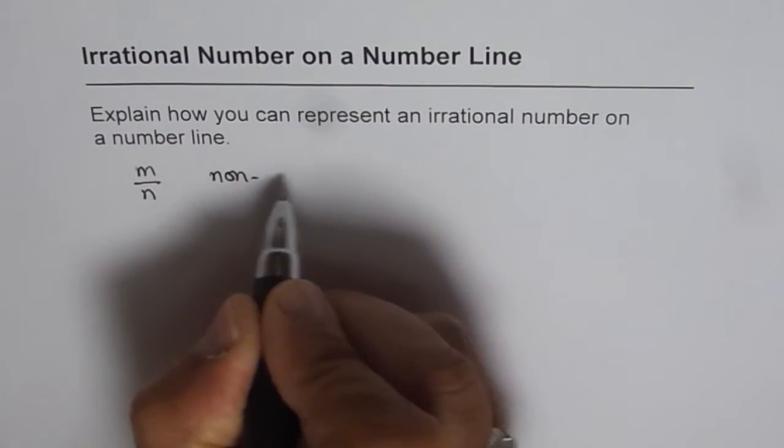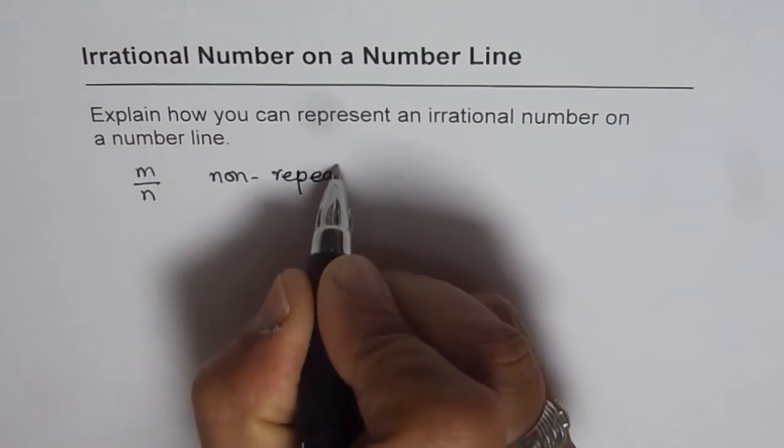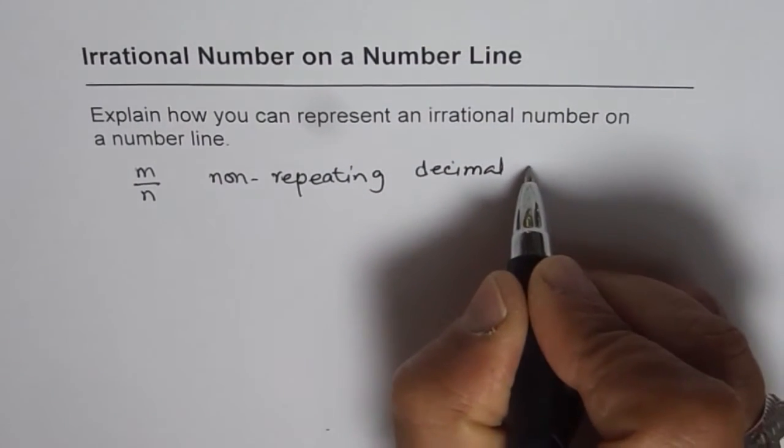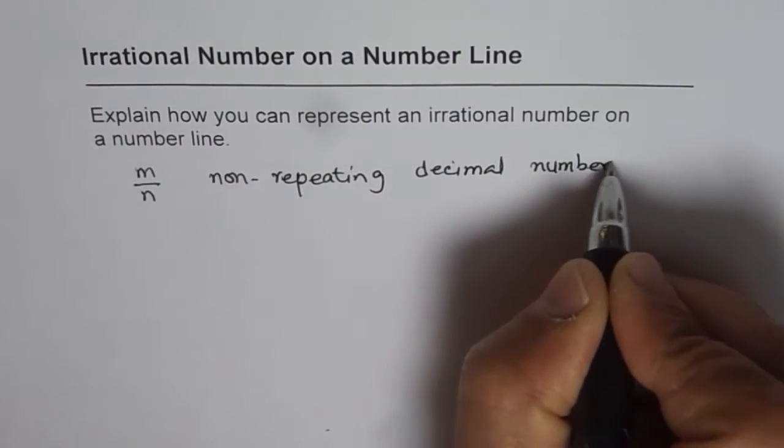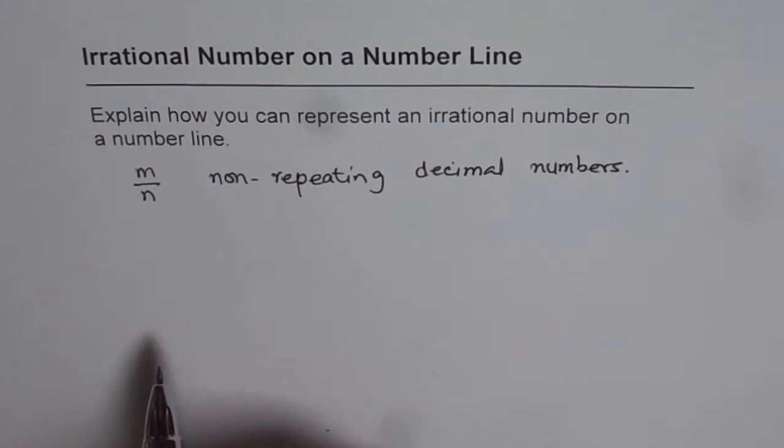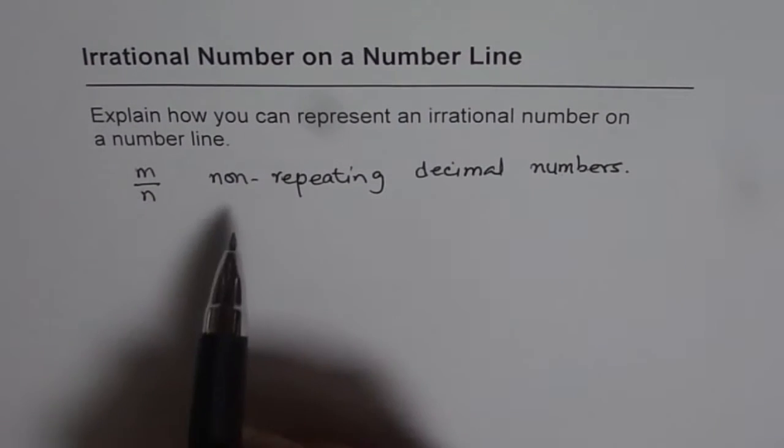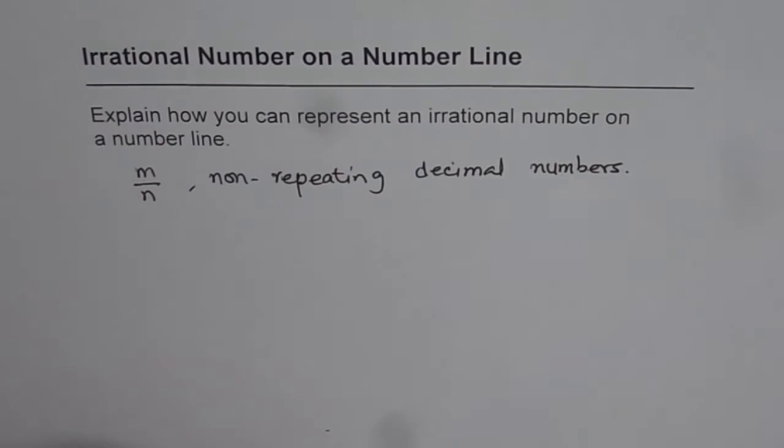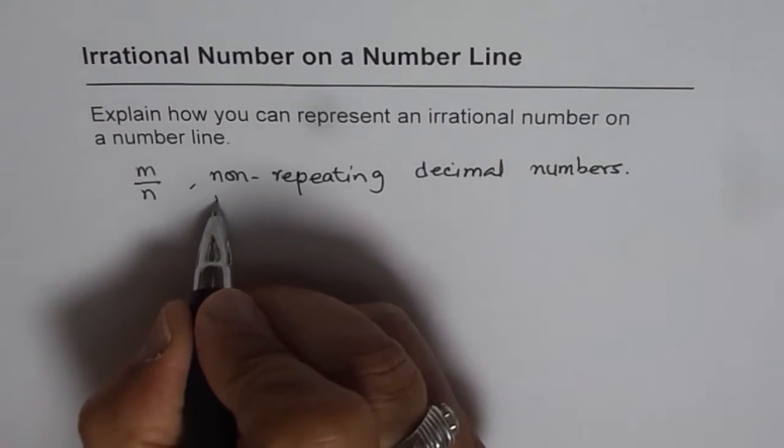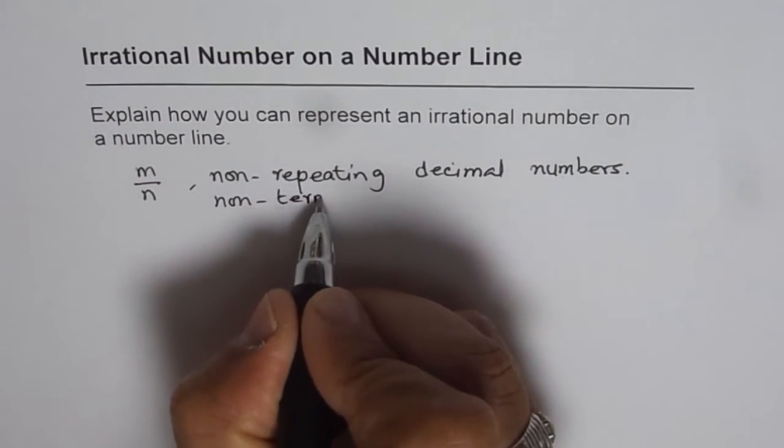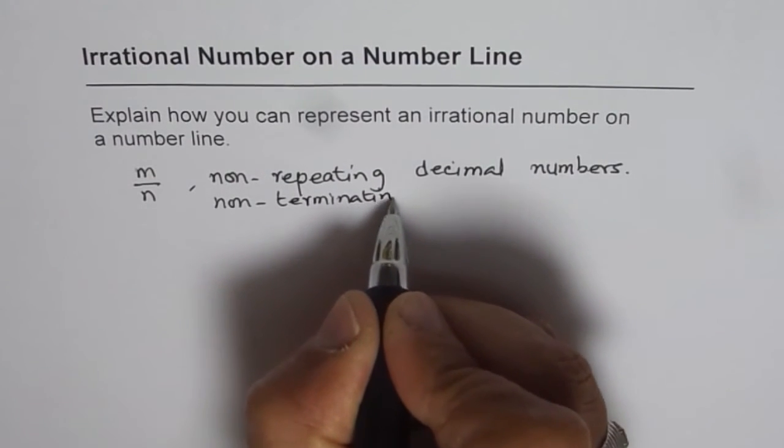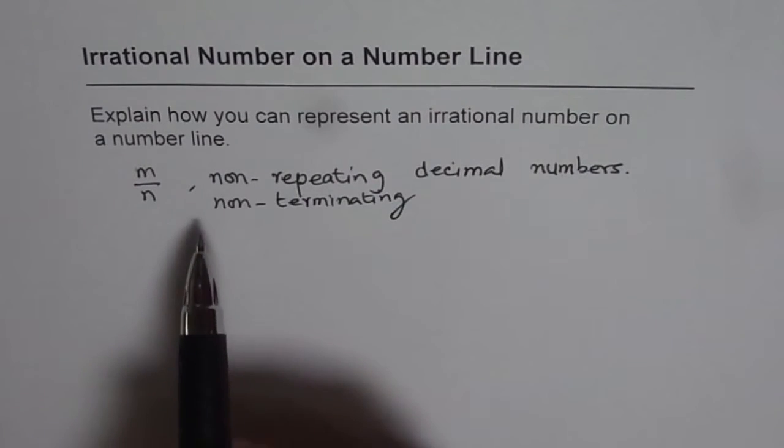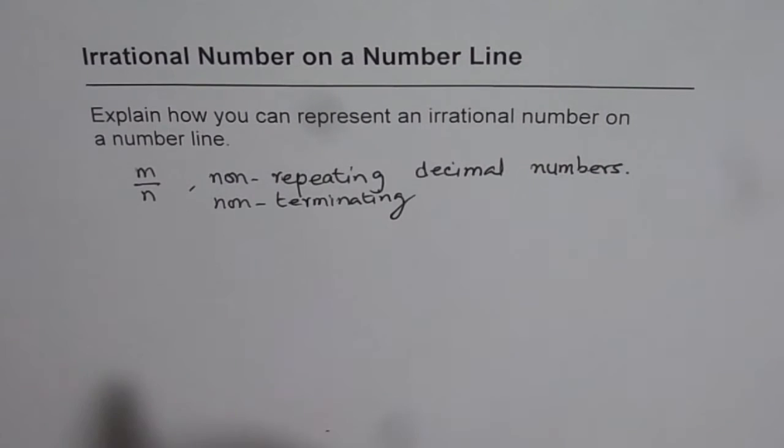And the reason is that they are non-repeating and non-terminating decimal numbers. So if you want to write them as a decimal number, they will be non-repeating and non-terminating decimal numbers.